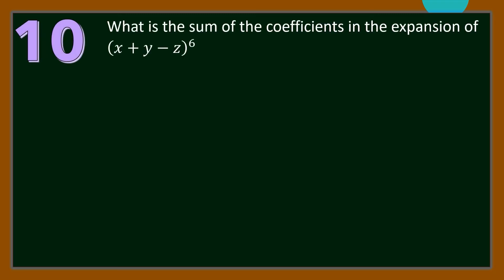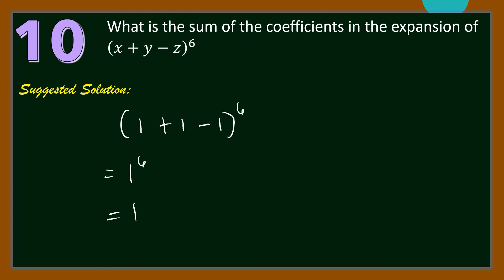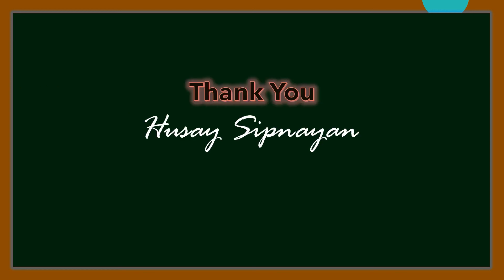Number 10: What is the sum of the coefficients in the expansion of (x plus y minus z) raised to the 6th power? To get the sum of the coefficients, we substitute 1 for each variable: 1 plus 1 minus 1 raised to 6 equals 1 raised to 6, which equals 1. Therefore, the sum of the coefficients in the expansion of (x plus y minus z) to the 6th power is 1. That will be all for the first part. Thank you for watching. Please subscribe for more Math Contest Drills for Filipino Kids videos.